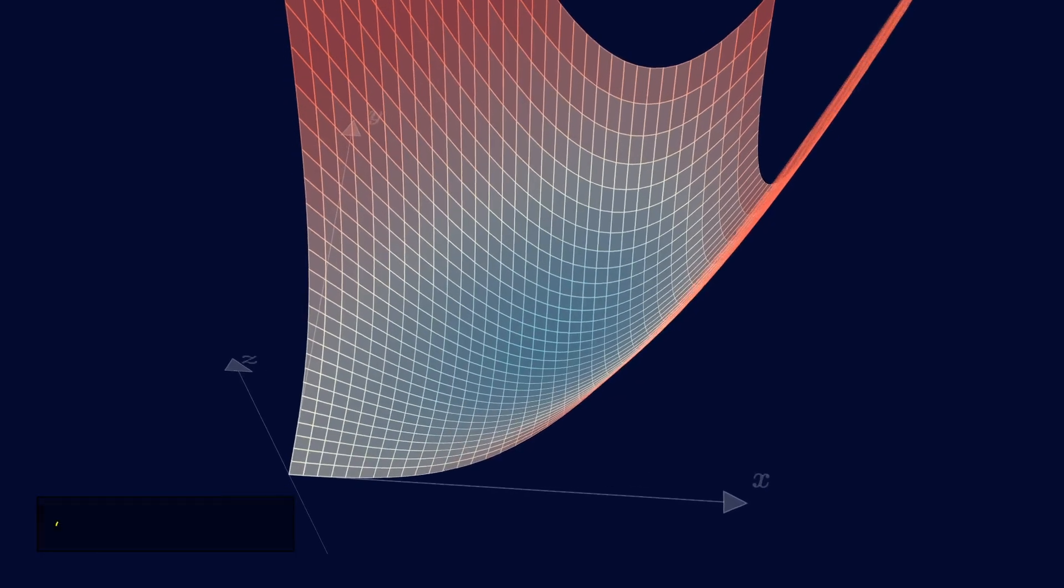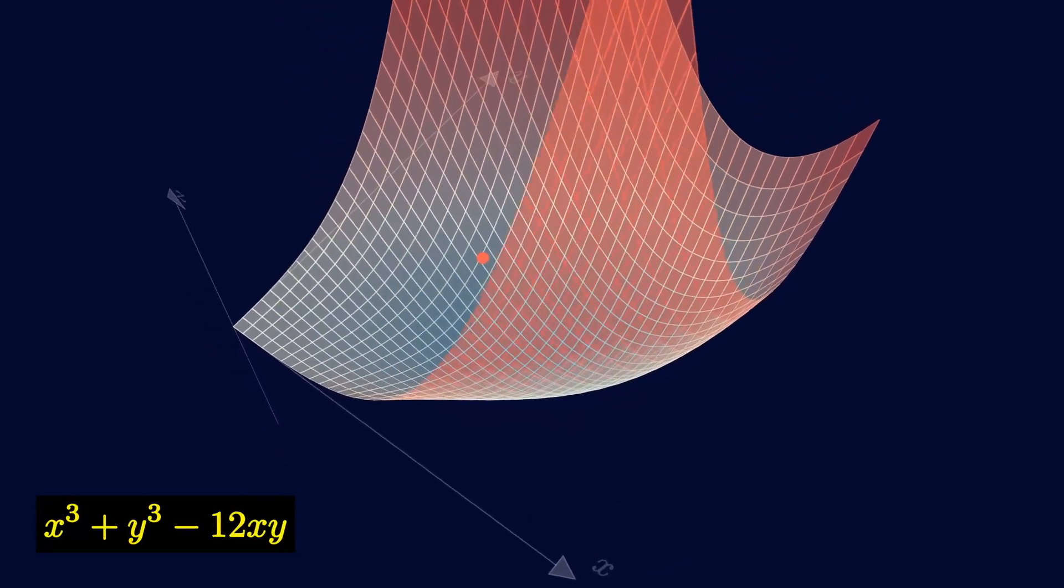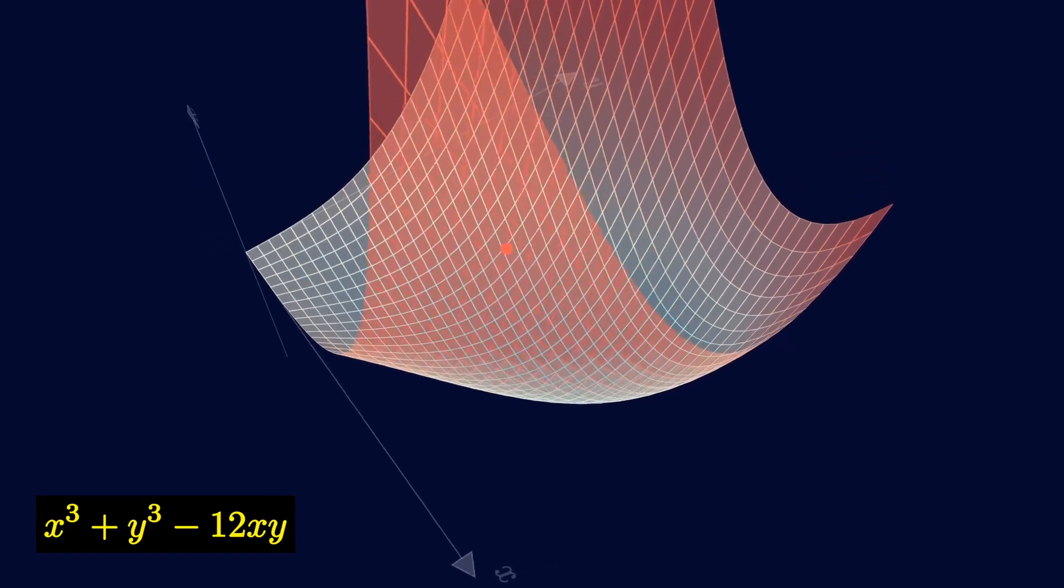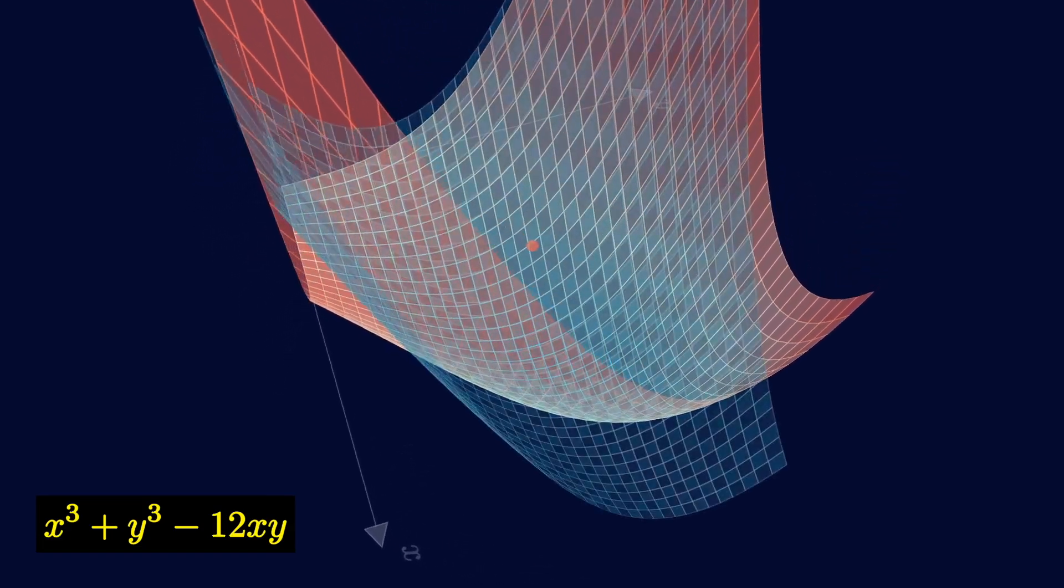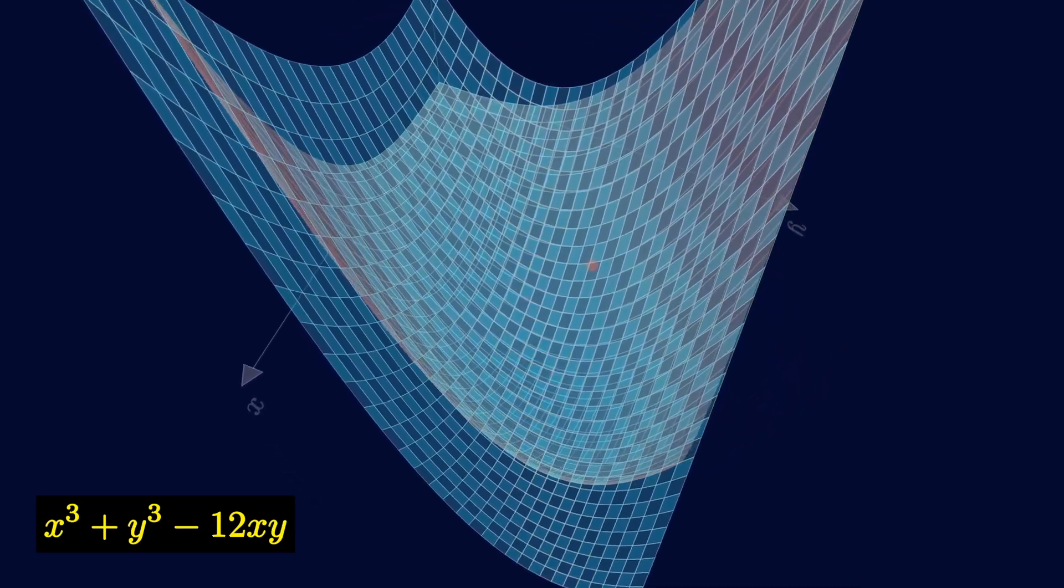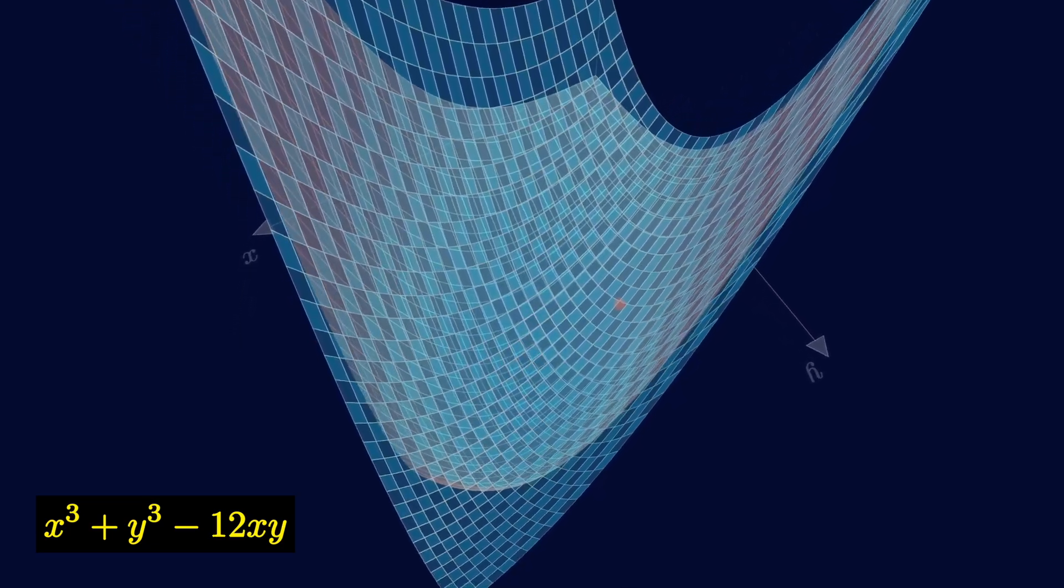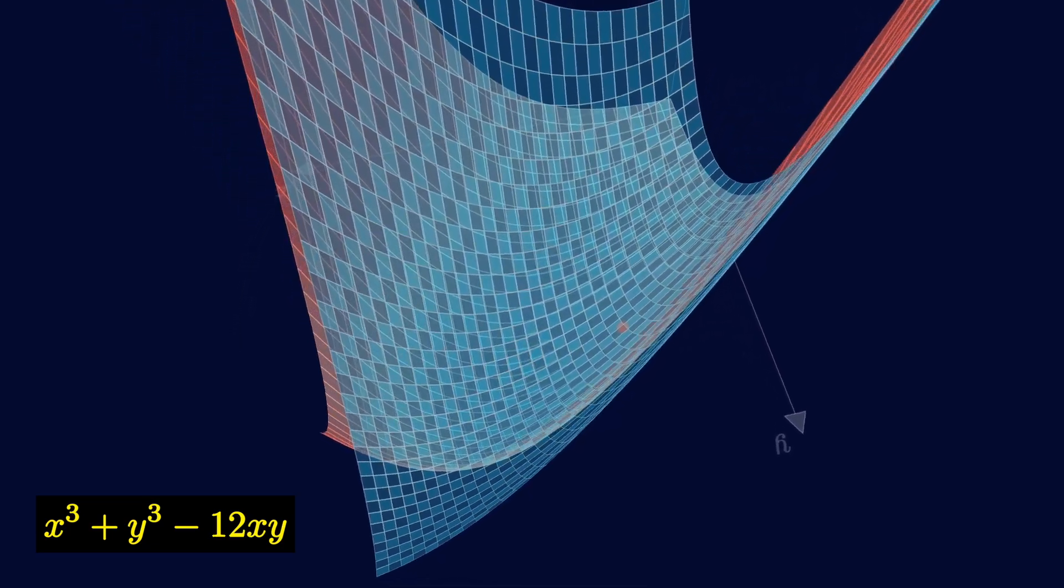So a quadratic Taylor polynomial means, given a point, we want to approximate this function locally at that point using a quadratic surface. If we can find this Taylor polynomial, we can try to use Newton's method like before. So the real question is, how do we derive this quadratic Taylor polynomial?